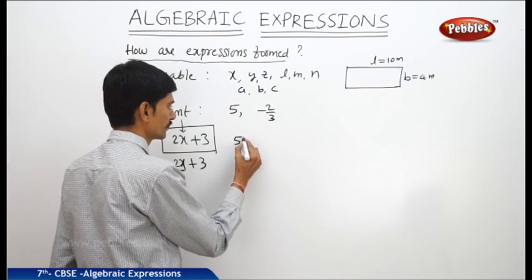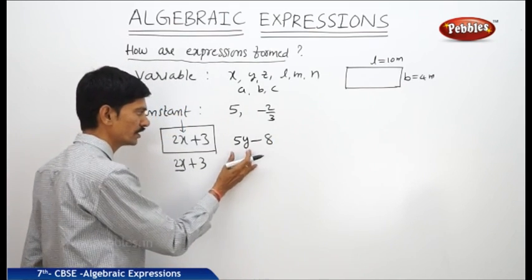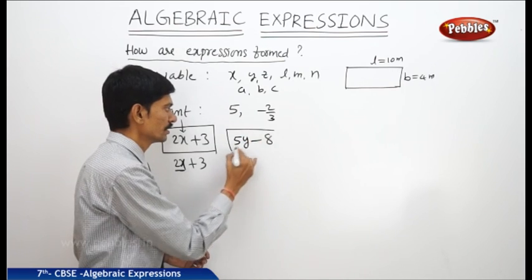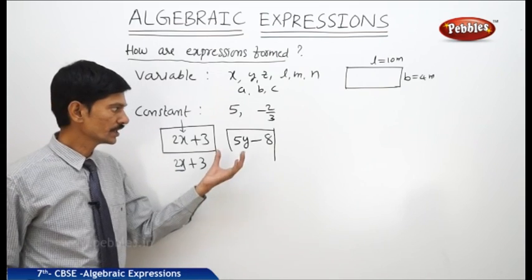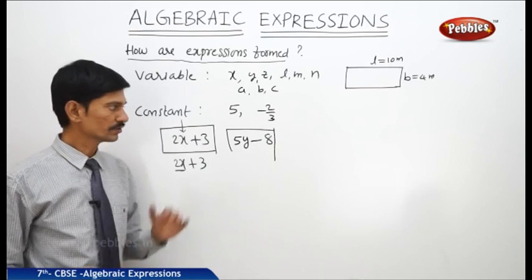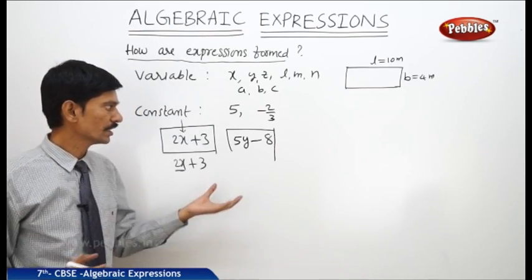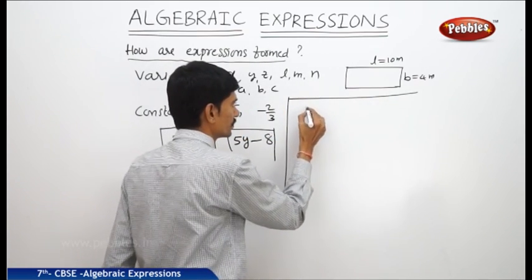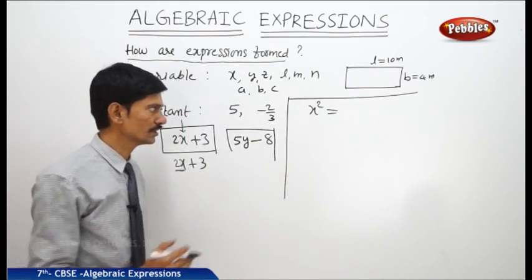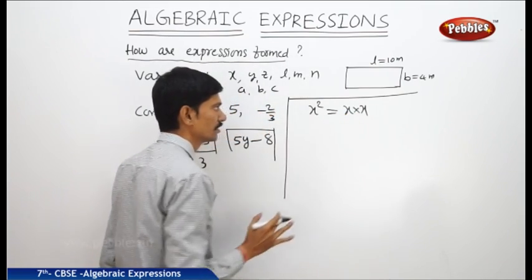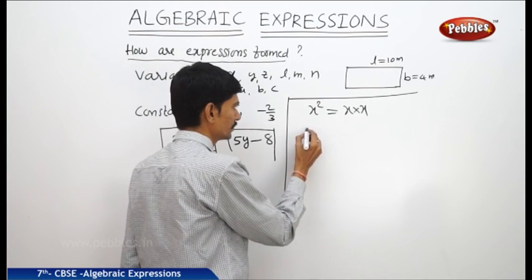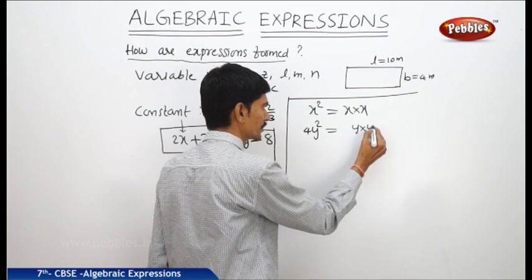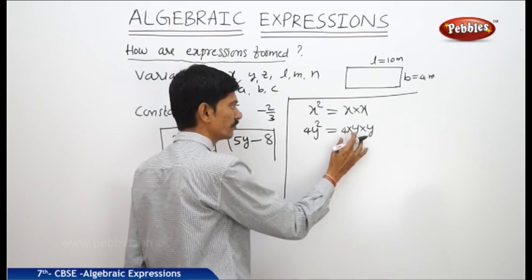Another example: 5y minus 8. Here the variable y is multiplied by 5, then from the product 8 is subtracted. So this is also an expression — 8 is subtracted from the product of 5 and y. We combine the variables and constants to form the expressions. Actually, algebraic expressions are formed by combining the variables and constants. Sometimes we combine the variable itself — for example, x square is obtained by multiplying x by x itself. So then we get the term x square.